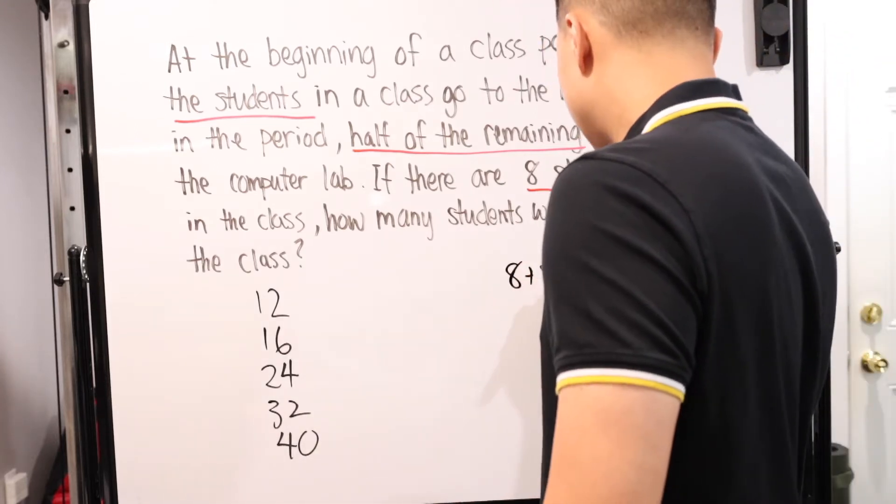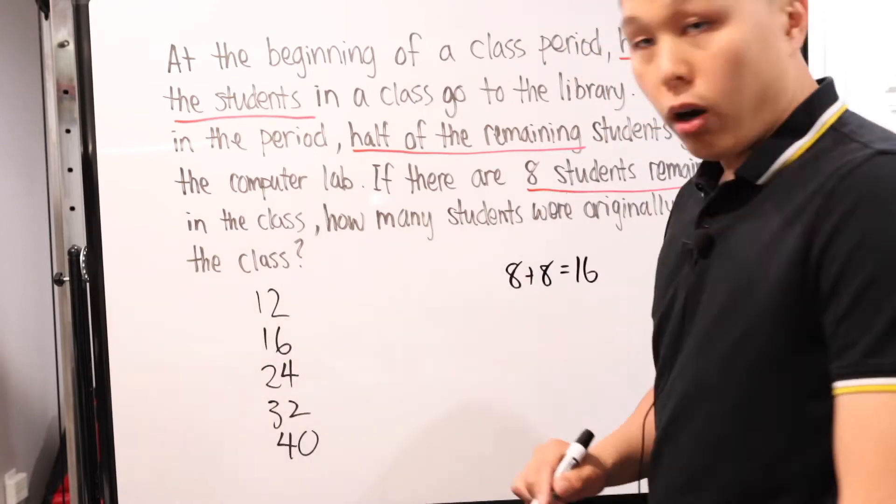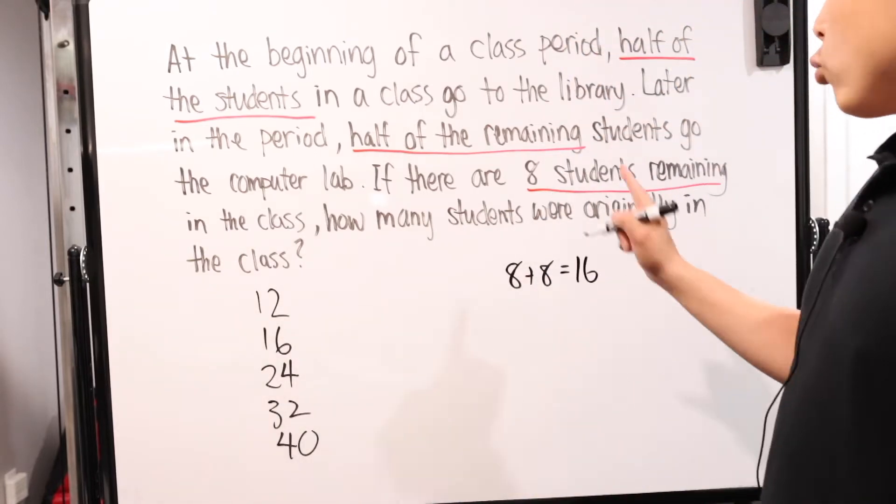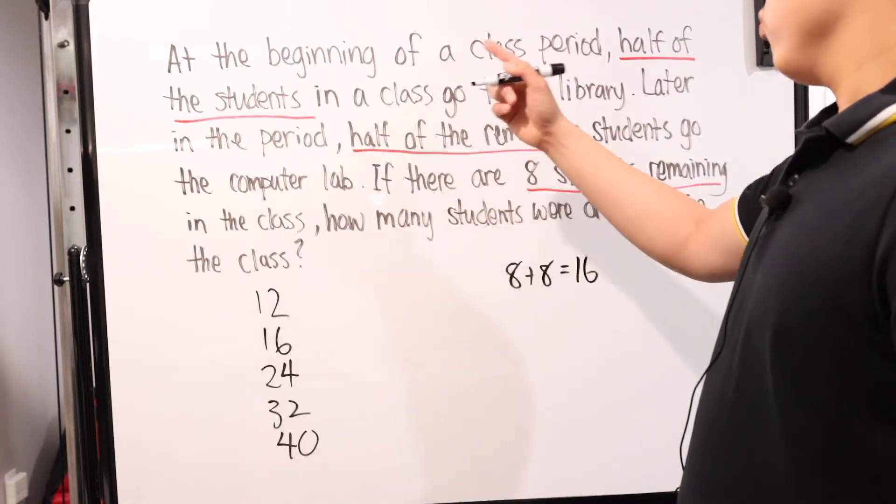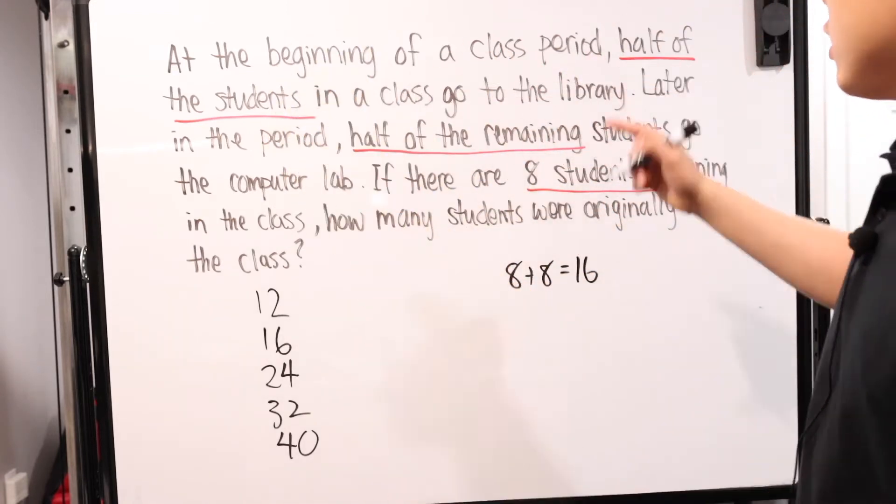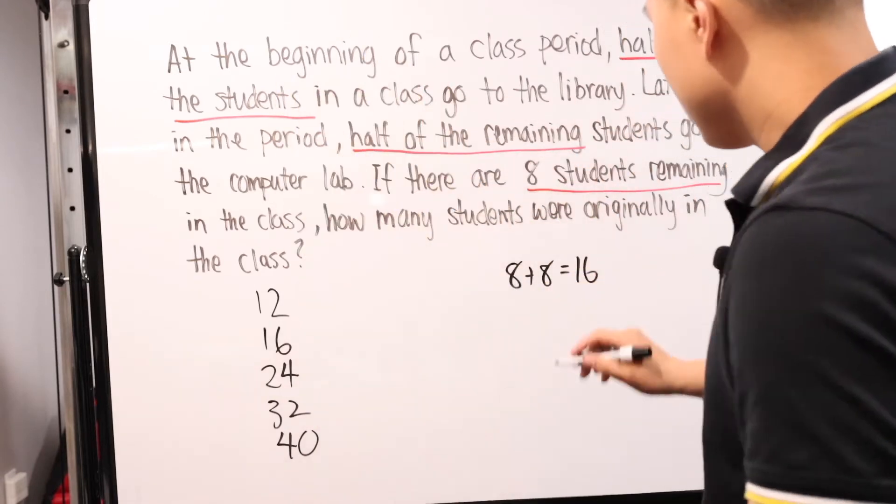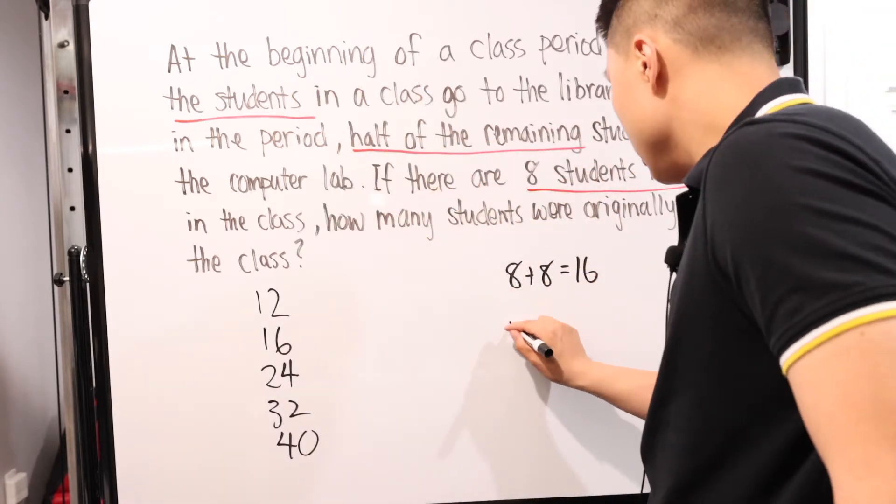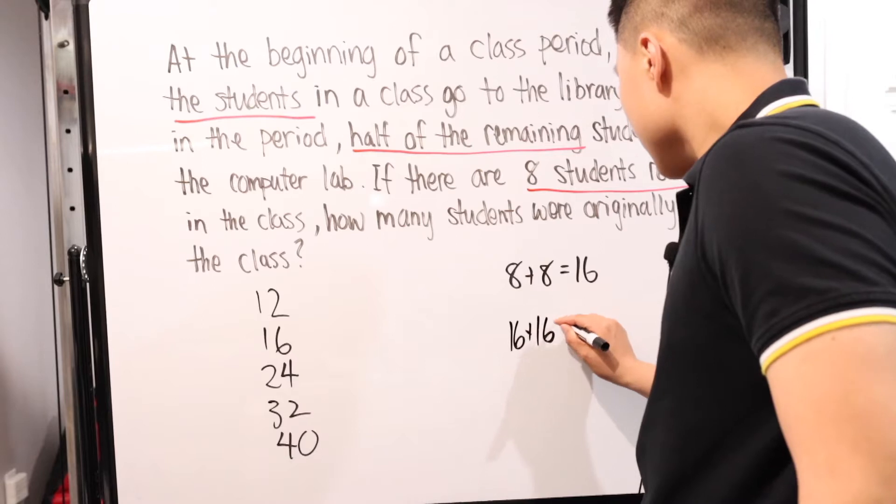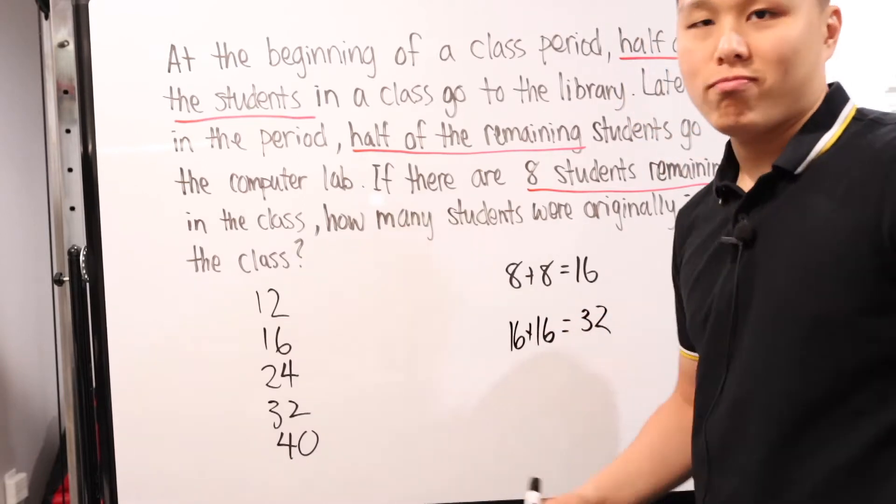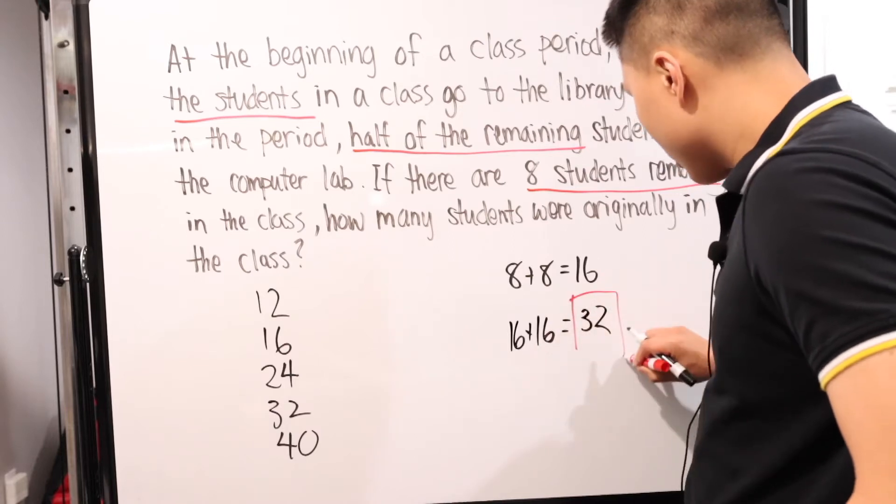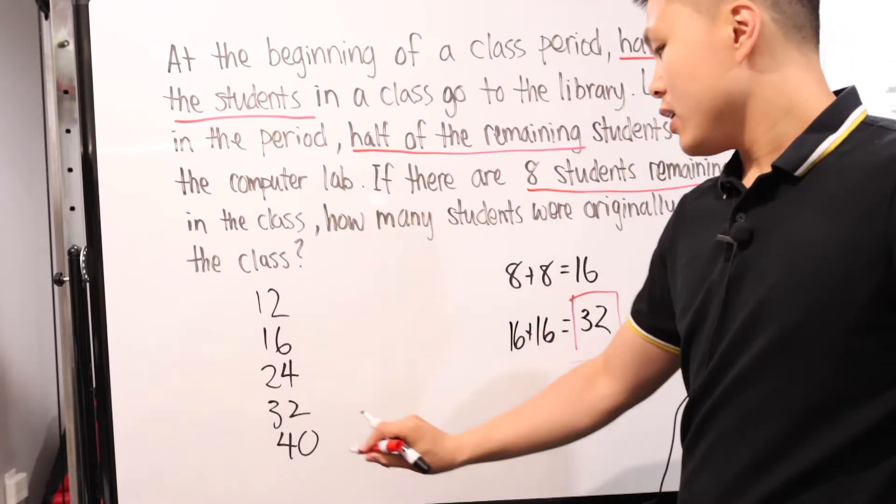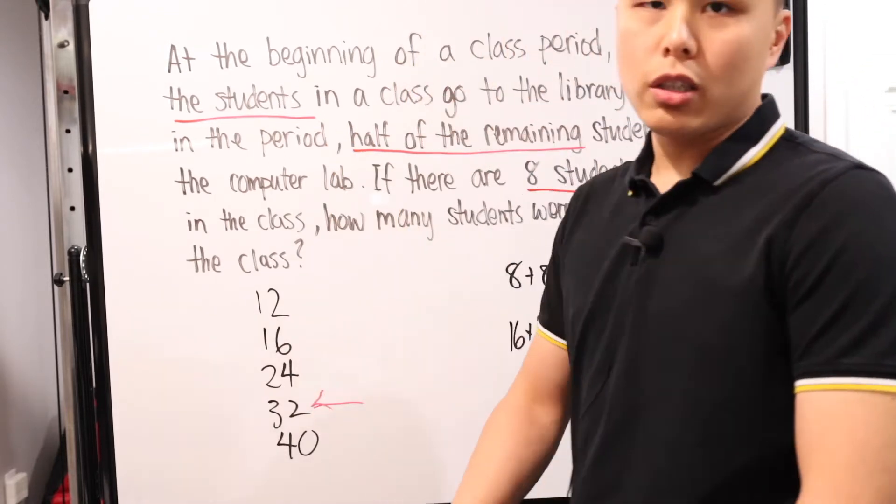If eight is remaining and that was because half of them already went to the computer lab, all we have to do is given our list of potential answers, let me write down the entire list: 12, 16, 24, 32, and I think 40 or something. You can go from eight and go backwards and then just start figuring out which one of these actually matches it. So eight plus eight is 16.